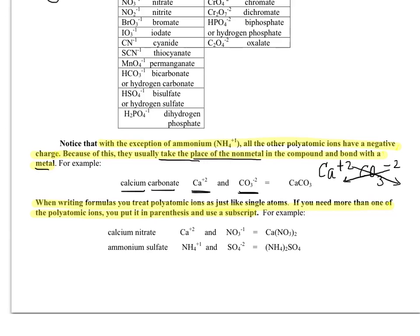And we'd end up with Ca2, because this negative two would come down here next to the calcium, and CO3 two. Now, when we bring a number down to make a subscript to say we're going to have a certain number of polyatomic ions, we always put the polyatomic ion in parentheses, and so then that two would go outside of it.